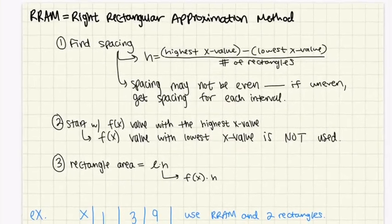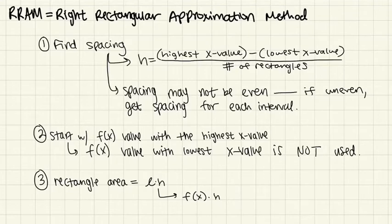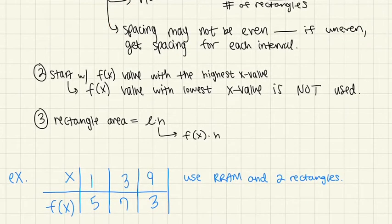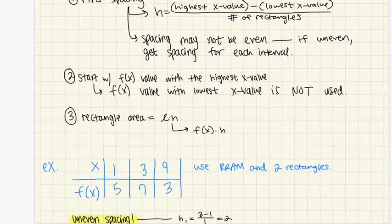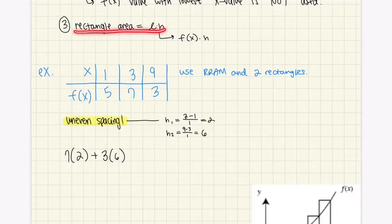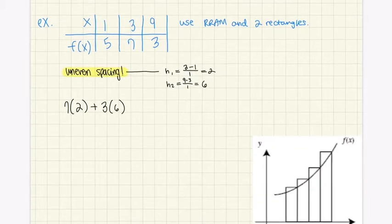Now moving into RRAM — the Right Rectangular Approximation Method. This is going to be an overestimate, which is the opposite of LRAM. We go through the same steps: find the spacing as before. Then you start with the f(x) value at the highest x value, and you do not use the f(x) value at the lowest x value. It still uses rectangles, so the area formula is length times height.